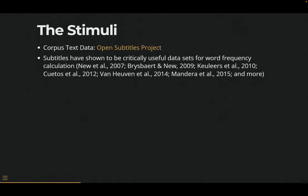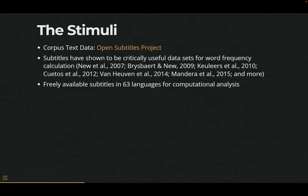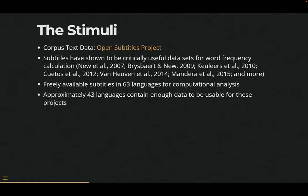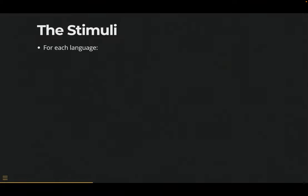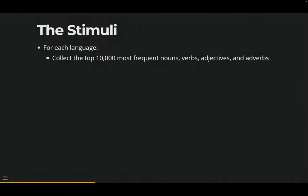How do we pick the stimuli? We use the Open Subtitles project — this is such cool data. Subtitles are critically useful and very good for our assessment of word frequency, which is then very predictive of response latencies. It's a set of data covering 63 languages that are downloadable, and about 43 of those languages are usable for our purposes. So what we did was take the top 10,000 most frequent nouns, verbs, adjectives, and adverbs using the Udipipe package.